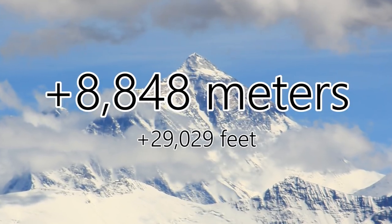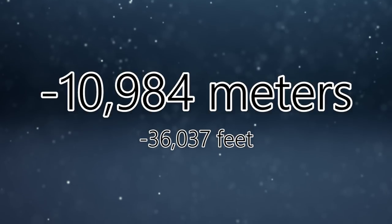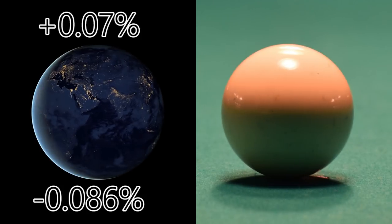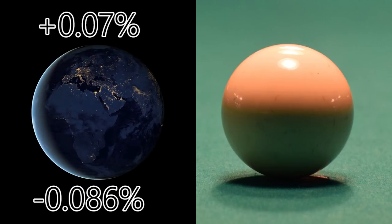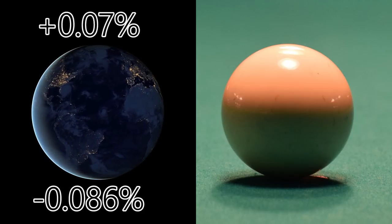Now let's look at the surface of the Earth. The highest point on the surface of the Earth is Mount Everest at 8,848 meters above sea level. The lowest point is the Challenger Deep, which is part of the Mariana Trench at 10,984 meters below sea level. We find out that the highest point is around 0.07% higher than the average diameter of the Earth, while the deepest point, the Challenger Deep, is around 0.086% below the average diameter of the Earth.